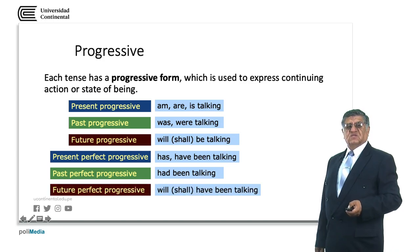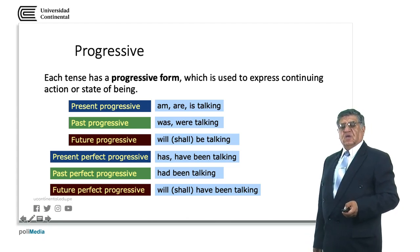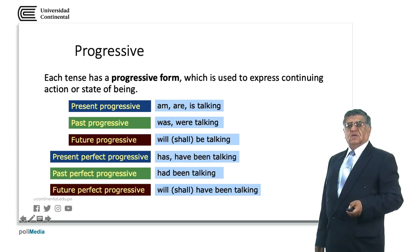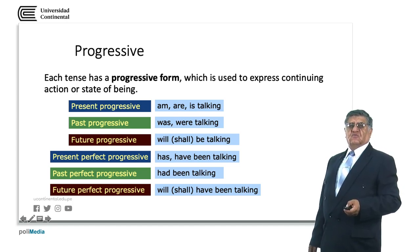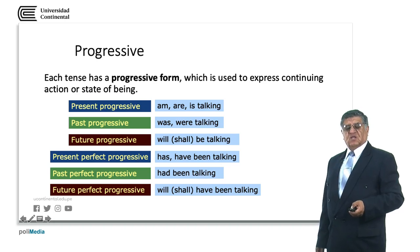The future perfect progressive is will or shall have been talking. This tense is going to be studied more in the second course, and by the final part of this course it will be treated in the third conditional form with a slight variation.